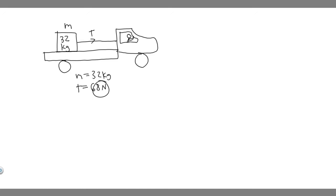Keep in mind the tension is acting in the forward direction — it's stopping the crate from flying off the back. There's also a force acting in the opposite direction, toward the back, which is what causes the crate to tend to fly off.